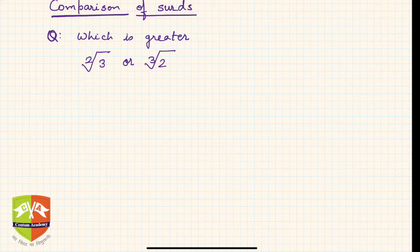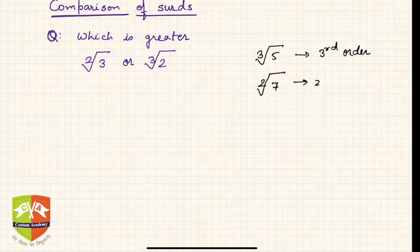The nth root of a particular number - that n is called the order. For example, third root of 5, this surd is of third order or cubic surd. Similarly, second root of 7 is second order surd. You learned this in the previous session.